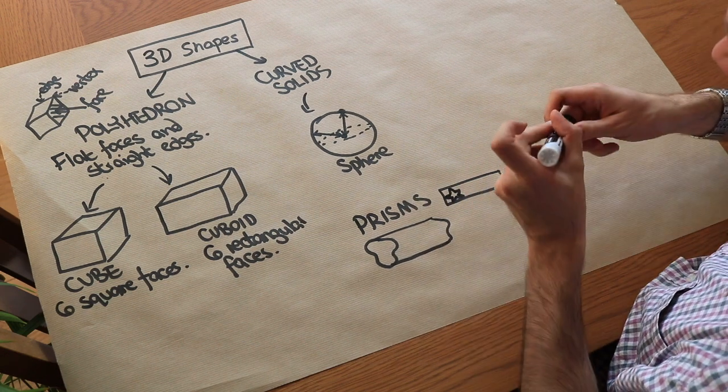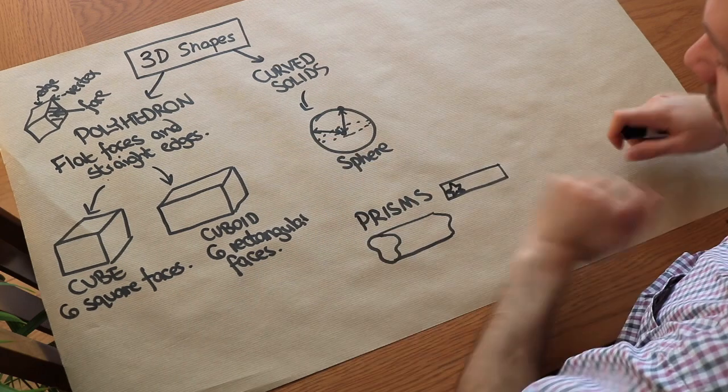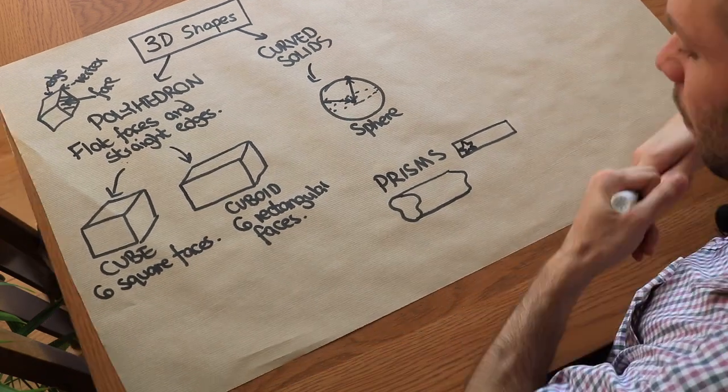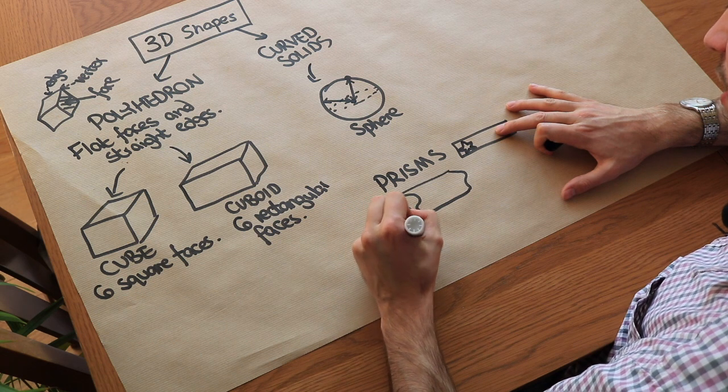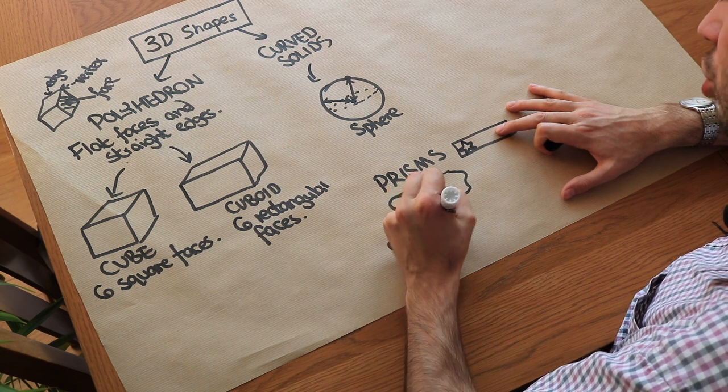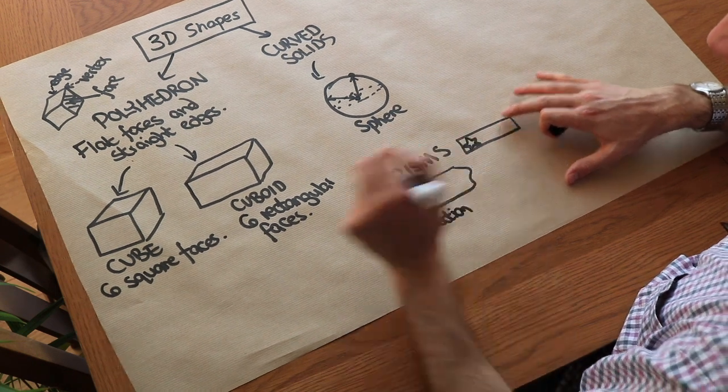So we have a sequence of different shapes which we can force this gooey play-doh through. And it might be you force it through a star, and it comes out like a tube where wherever you chop it you see that star shape. And we call that shape that you see the cross section. So the cross section means wherever you chop the prism you will see that same shape.